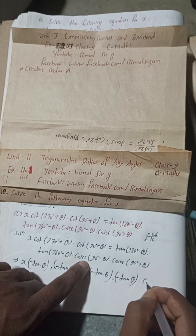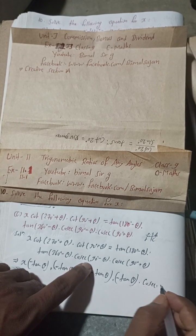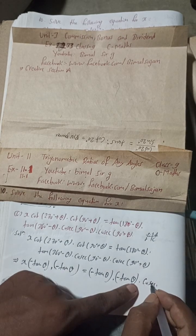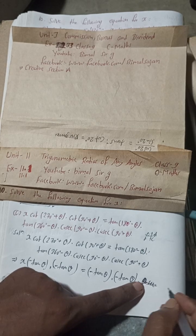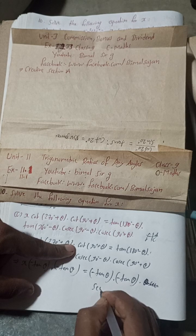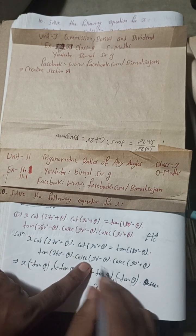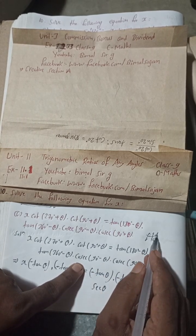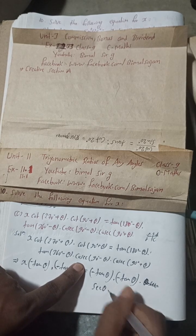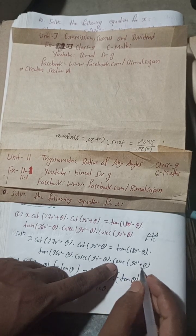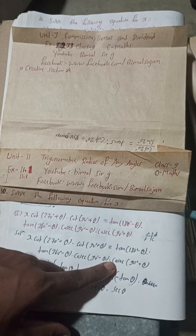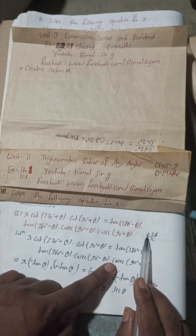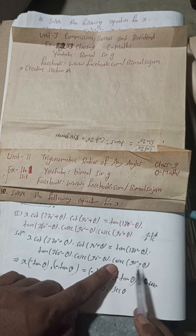For cosec(90° − θ): cosec becomes sec, and 90° − θ is in the 1st quadrant which is always positive, so cosec(90° − θ) = sec θ. For cosec(90° + θ): cosec becomes sec, and 90° + θ is in the 2nd quadrant where cosec is positive, so cosec(90° + θ) = sec θ.